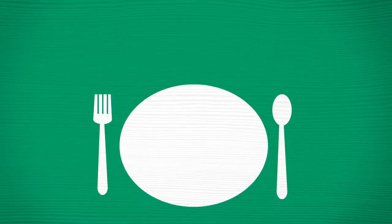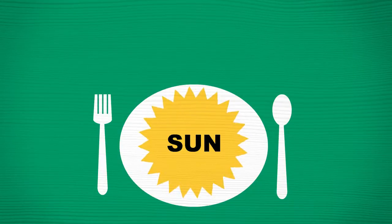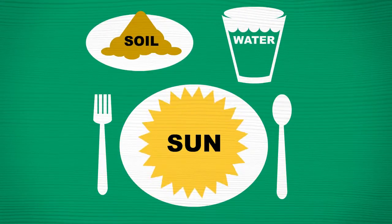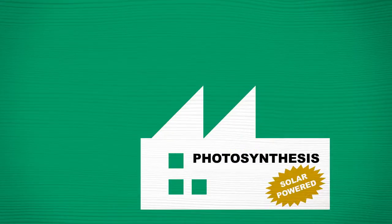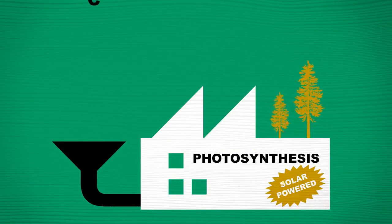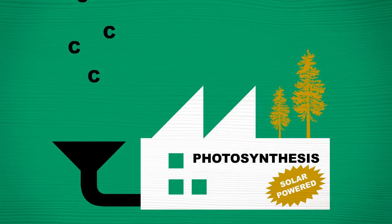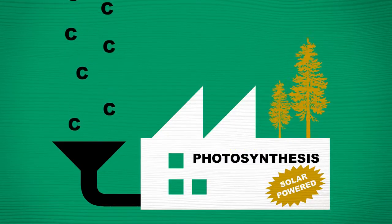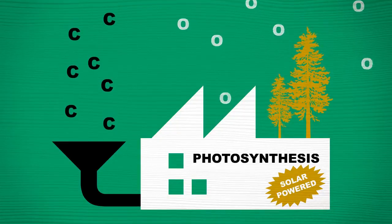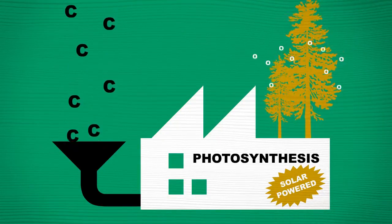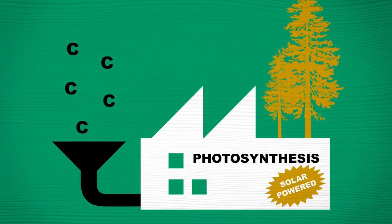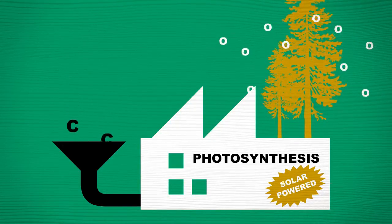Trees, like all plants, need sunlight to grow, along with water and nutrients. They use the sunlight to make their own food through photosynthesis. For this process, the tree takes carbon dioxide from the air and uses it to grow bigger and stronger, releasing oxygen in the process.